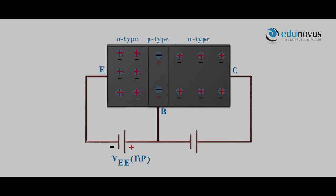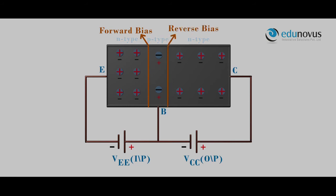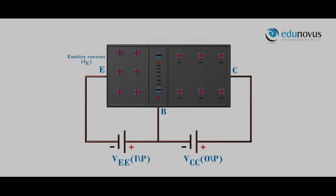In emitter-base forward bias, the electrons, which are the majority carriers in the N-type emitter region, move into the base region. This current is called emitter current IE. Out of the larger number of electrons, 2% combine with the few holes in the base, causing a small base current IB. The other 98% of the electrons cross over the collector-base junction, enter the collector region, and are attracted by the positive of the power supply Vcc. This current is referred to as IC.